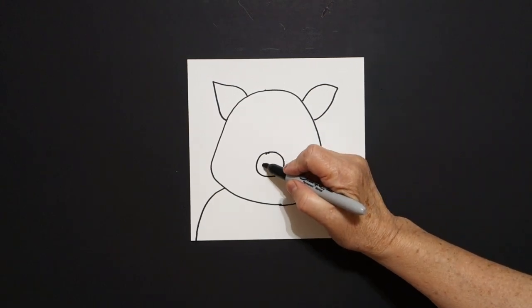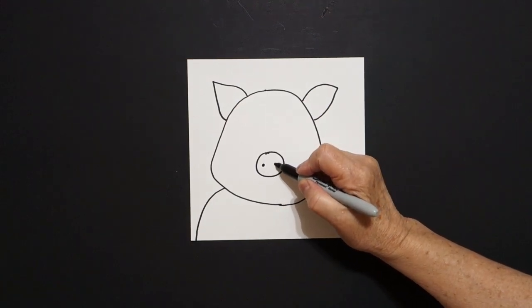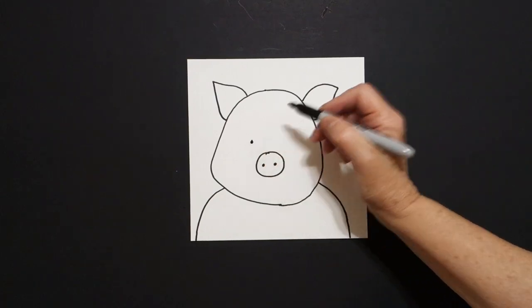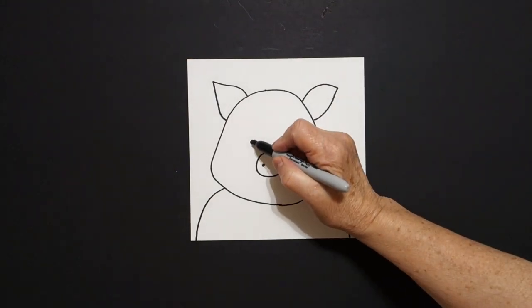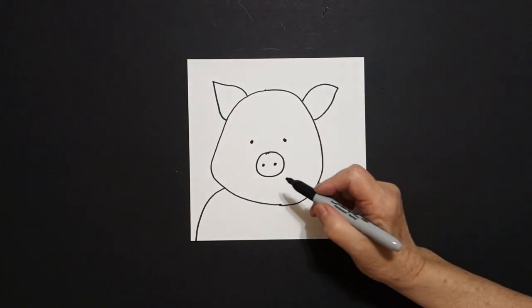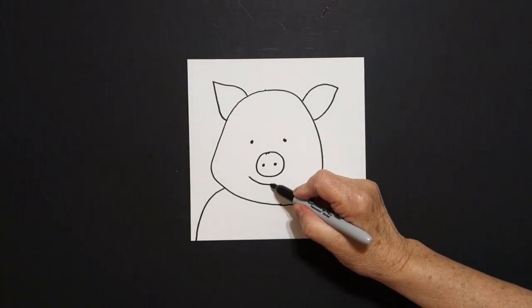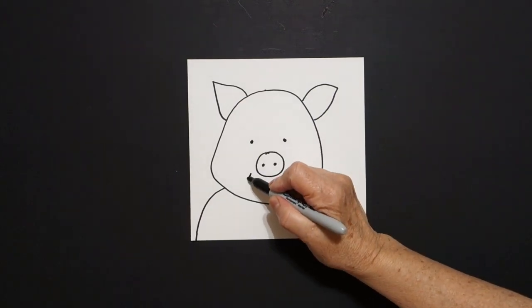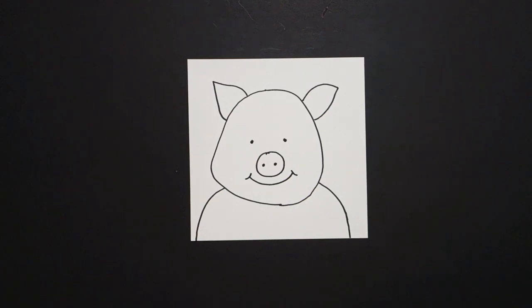Inside I put one dot, two dots. Right above I put on the left side one dot, two dots on the right, and big curved line, little curved line on the right, little curved line on the left.